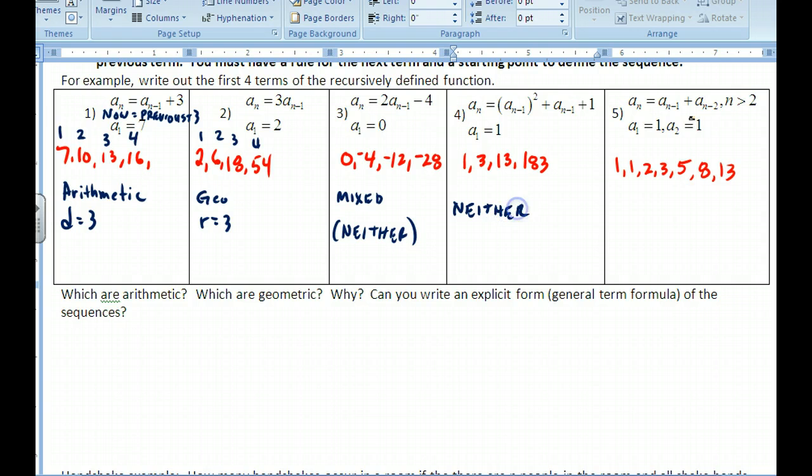This one here has a quadratic generator for the recursive mode. And so this one is a neither as well. And then this one here. Oh, this one's nice. This is Fibonacci. So with the Fibonacci, you take each of the two previous terms and add them to get to the next term.